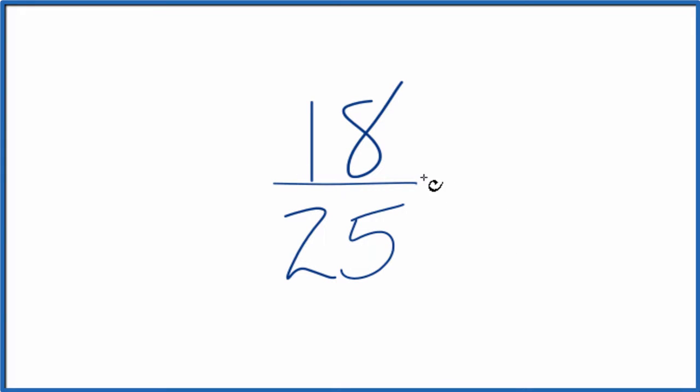As I look at this, I'm trying to find a number that's going to go into 18 and 25 evenly, and I don't really see anything. Let's write the factors of 18 and 25, then we can look for the greatest common factor.